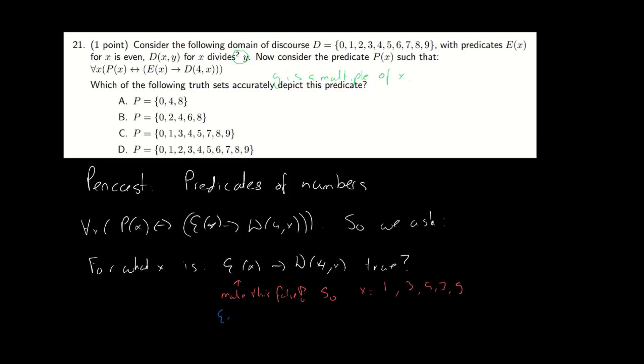Alternatively, we can make both parts of the implication true. So E(x) needs to be true and D(4,x) also needs to be true. So E(x) needs to be true, so that's the even numbers. And the number needs to be divisible by four.